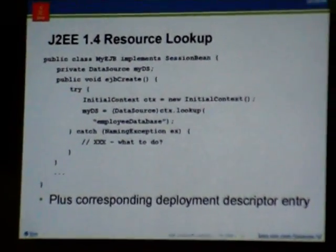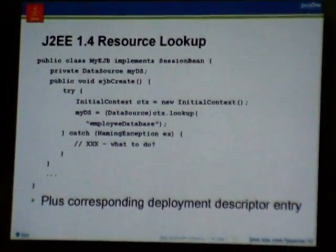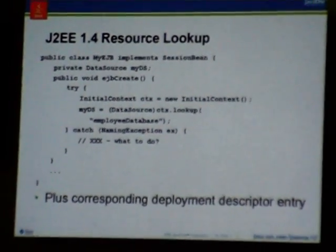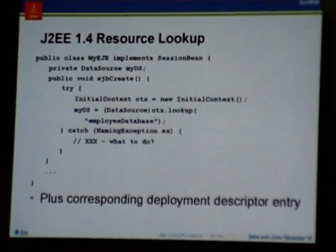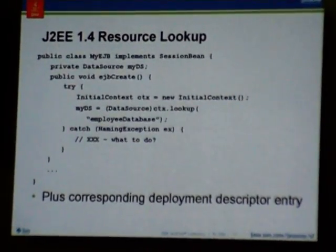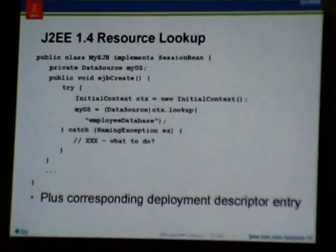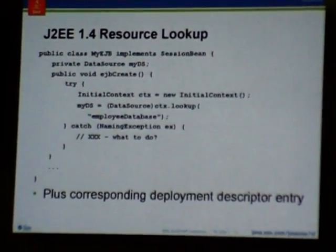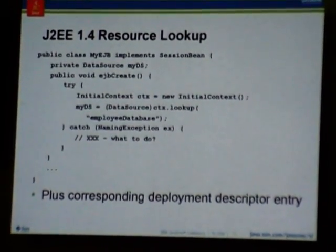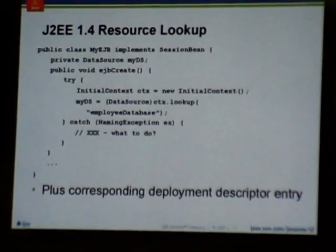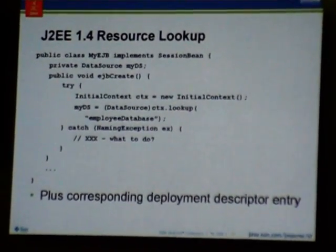By creating a new JNDI initial context, doing a lookup on the initial context with a JNDI name that you had to pick, and assign the result to the MyDS field. In addition, you had to wrap all this JNDI stuff in a try-catch block, even though there was really nothing you could do if you got the exception.